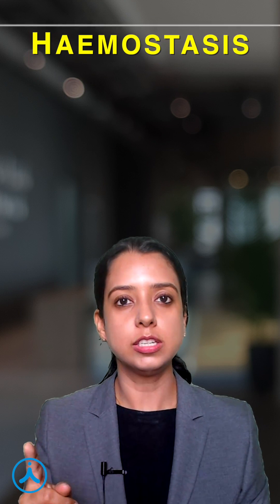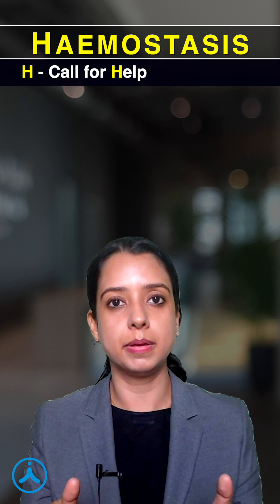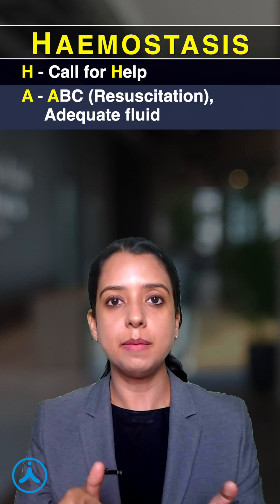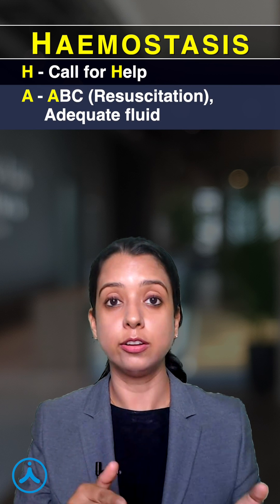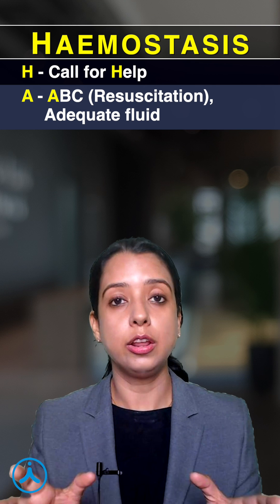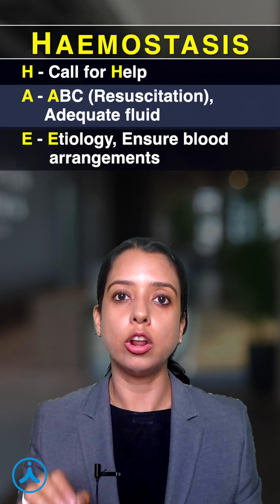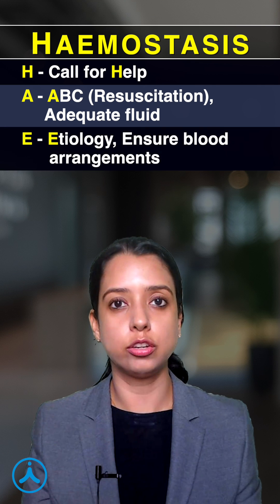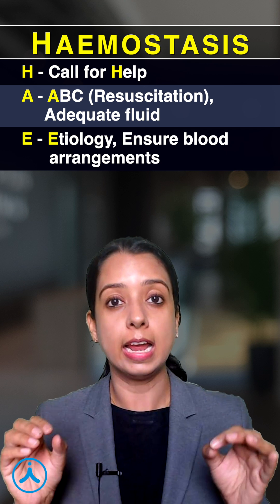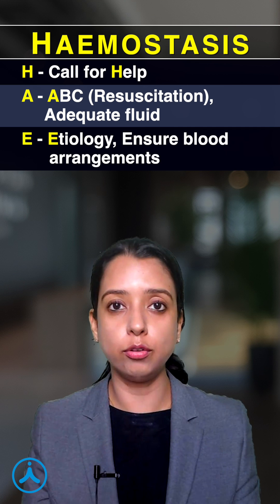H is for help — in any emergency, the first step is to ask for help. A stands for ABC: start your resuscitation and adequate fluid replacement. E is for etiology — establish the etiology, ensure how much blood loss there is, and arrange blood and fluids.